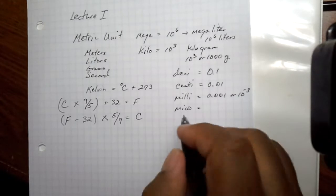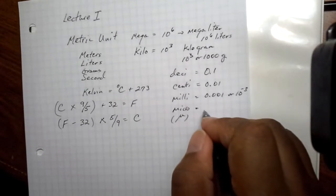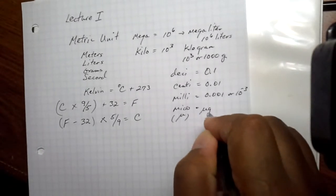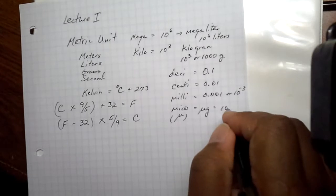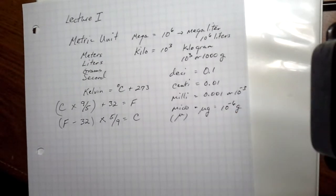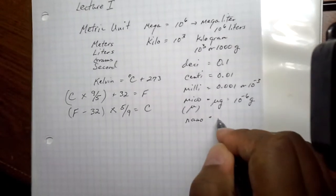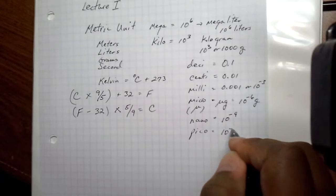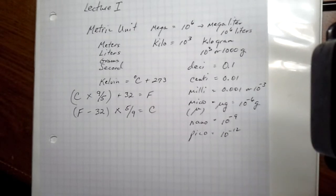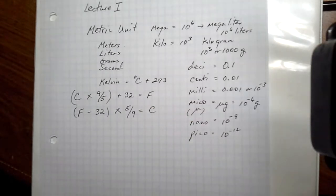Micro, we use the symbol mu to designate micro. So a microgram is equivalent to 10 to the minus 6 grams. And the last two, nano is equivalent to 10 to the minus 9. And pico is 10 to the minus 12. So these are common prefixes that go prior to measurements like meters, liters, and grams in particular.